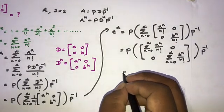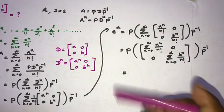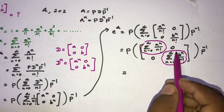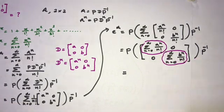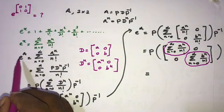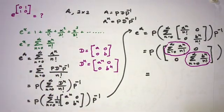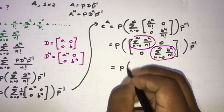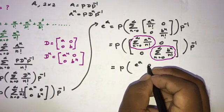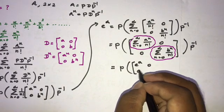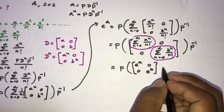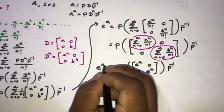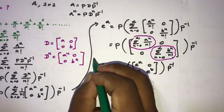Now these terms are familiar: the sum of a to the n over n factorial is e to the a, and similarly for b. So we can write e to the A equals P times the diagonal matrix with e to the a and e to the b on the diagonal, times P inverse. This is a very interesting formula.